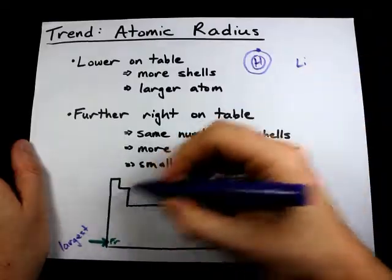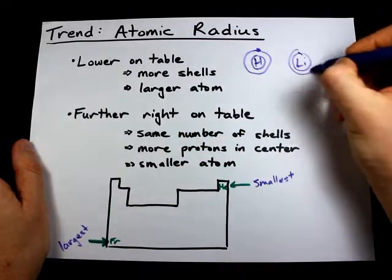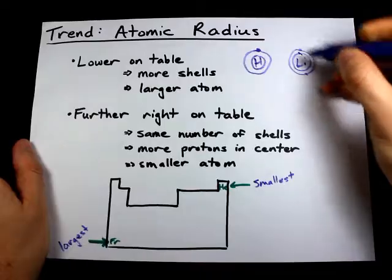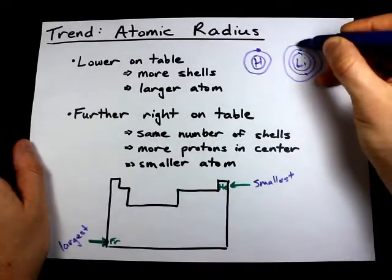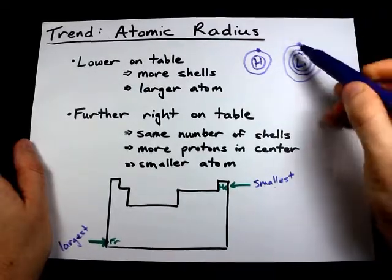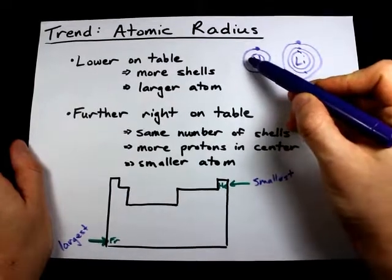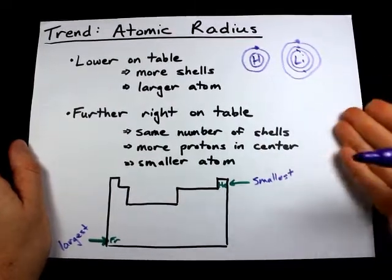The atom below it, lithium, has two electrons in its first shell which is full, and one electron in its second shell. Because it has two shells compared to one shell, it is a larger atom. Pretty straightforward.